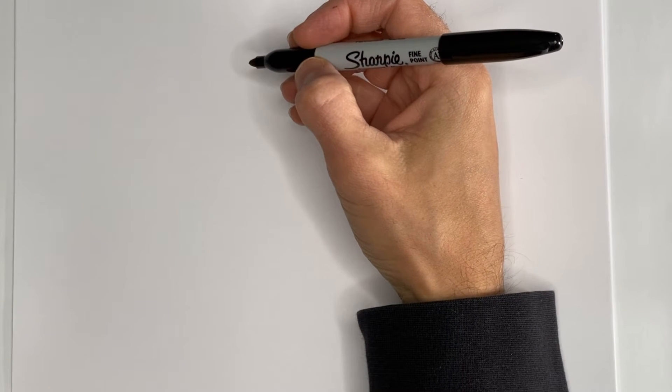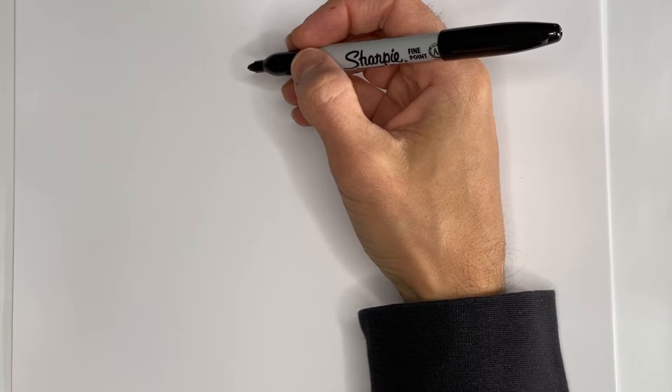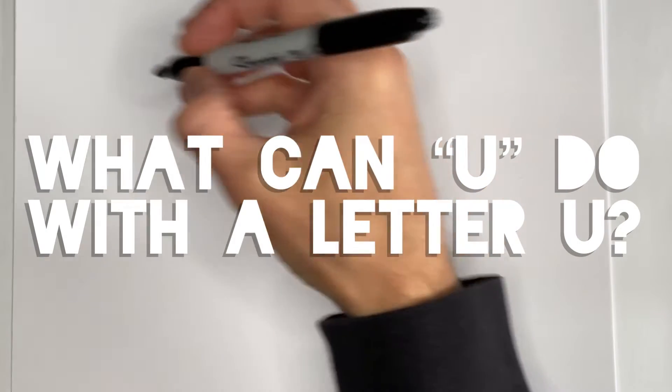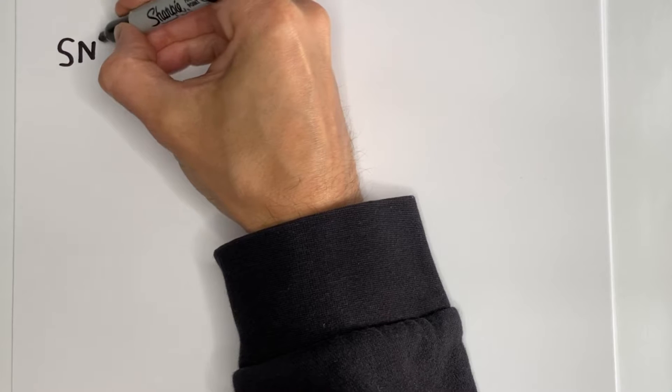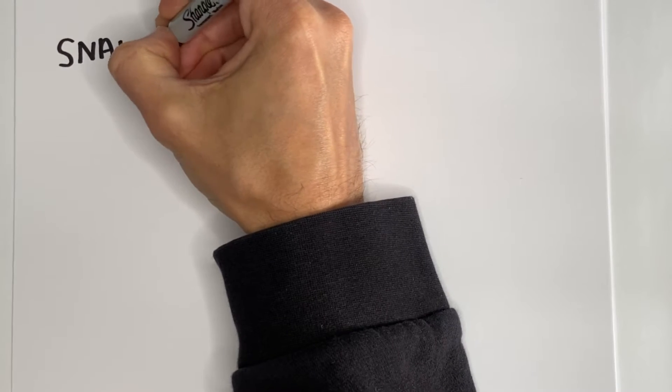Hey there, this is author illustrator Jarrett Lerner, and I'm back for another episode of What Can You Do With a Letter U? And today, we're going to draw some snails.